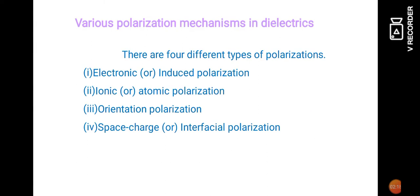There are four important types of polarizations available in dielectrics: the first one is electronic or induced polarization, the second one is ionic or atomic polarization, the third one is orientation polarization, and the fourth one is space charge or interfacial polarization.